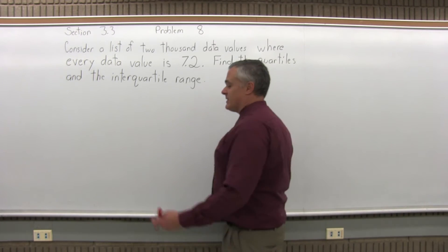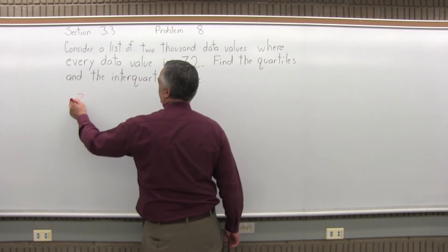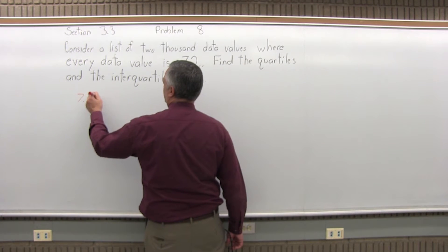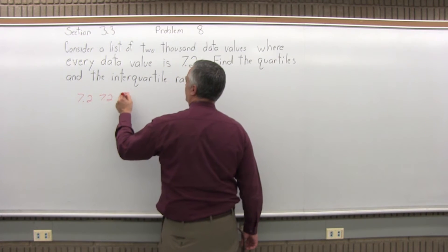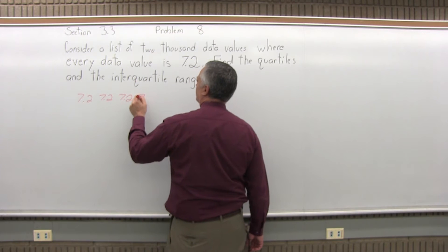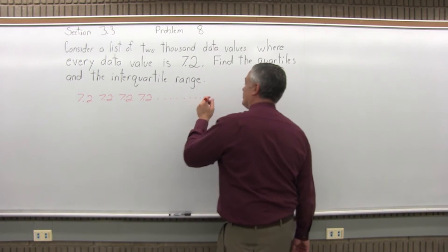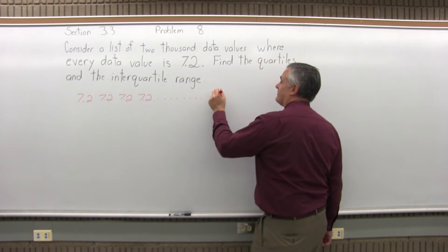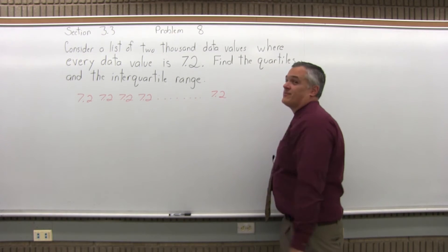This is kind of an odd set of data. You'd have 7.2, 7.2, 7.2, 7.2, 7.2 — dot, dot, dot — 2,000 of them, all 7.2.